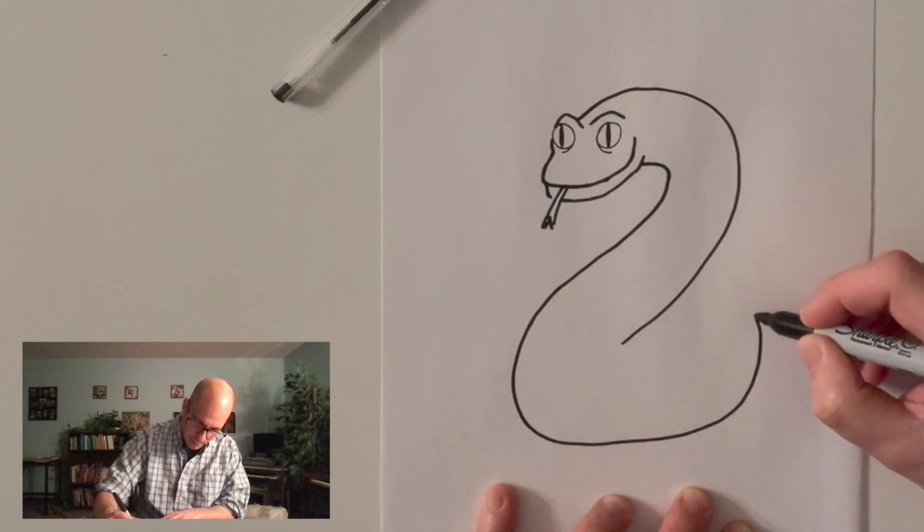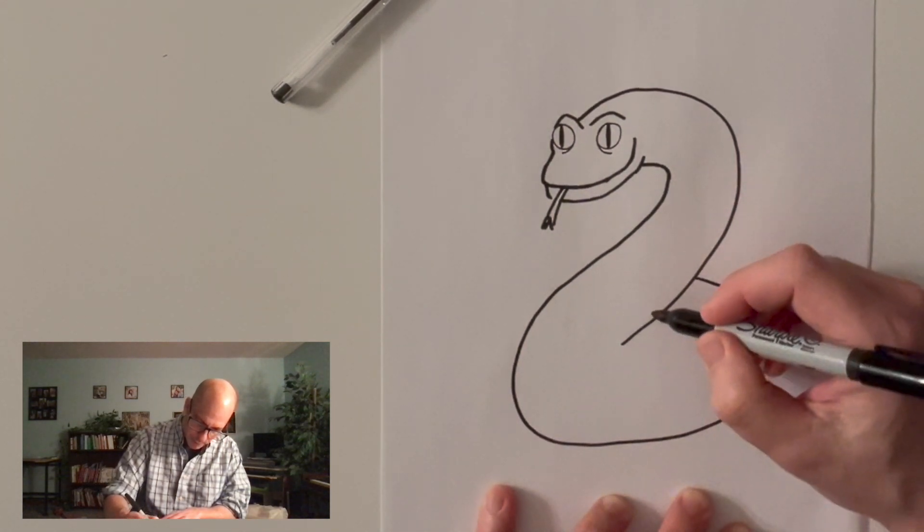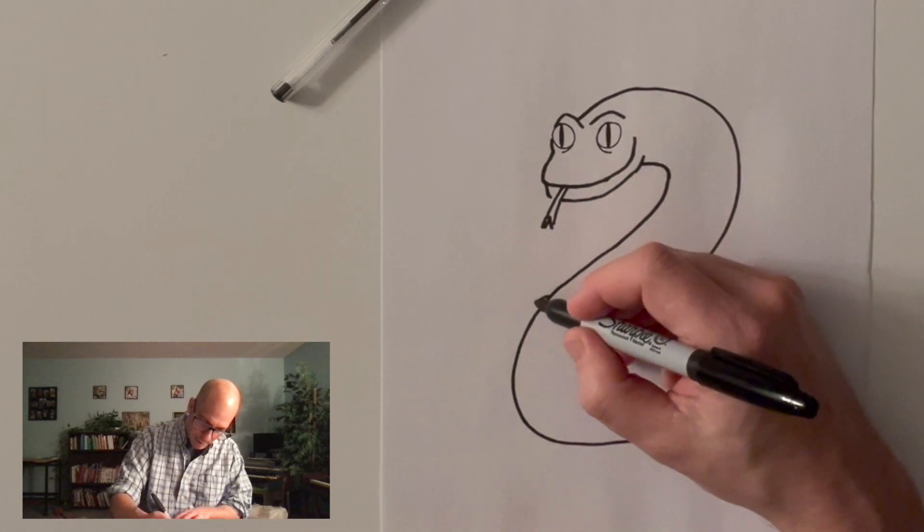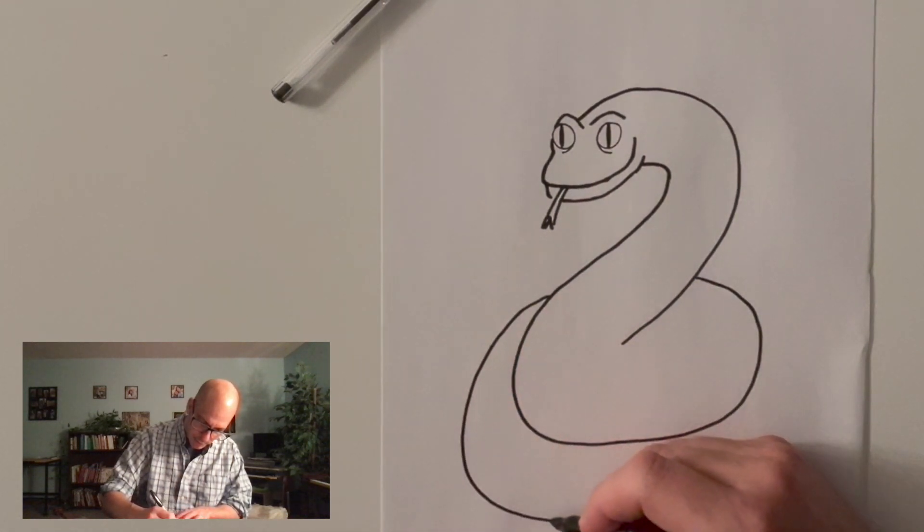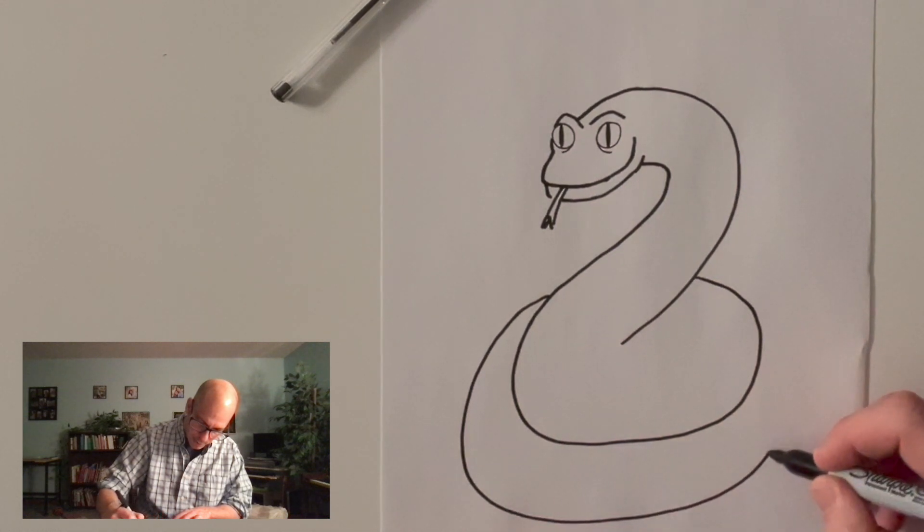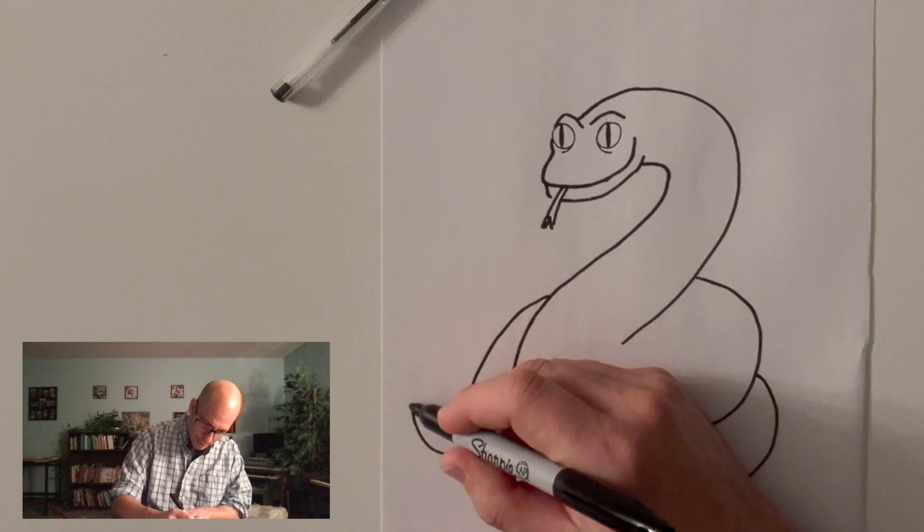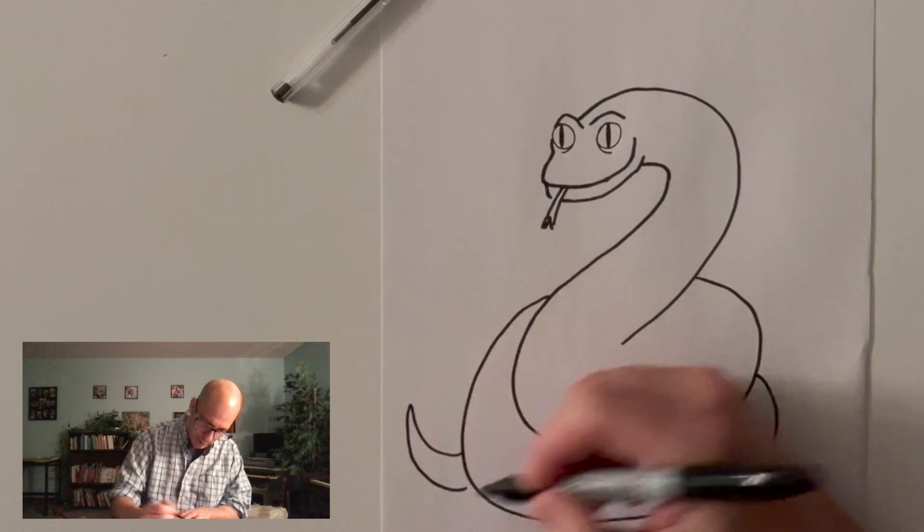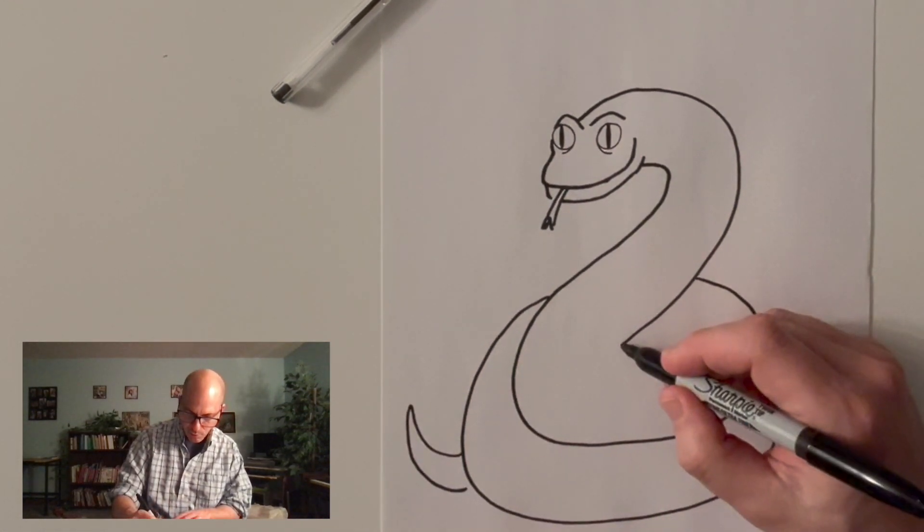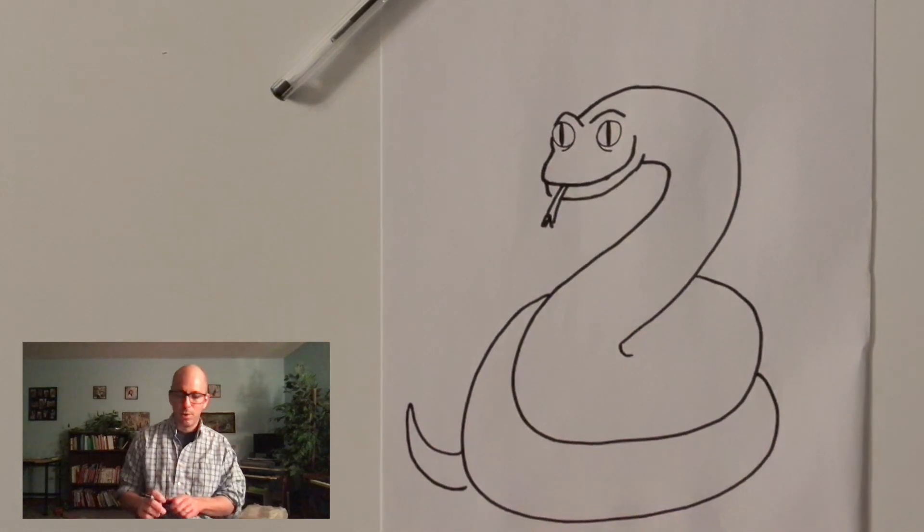But my snake is going to be coiled up, so its body is going to wrap around behind itself. So I'll just do a coil like this, kind of bringing it around. You can put a snake in literally whatever shape you want. That's what's so cool about drawing them. But that's probably pretty good for right now.